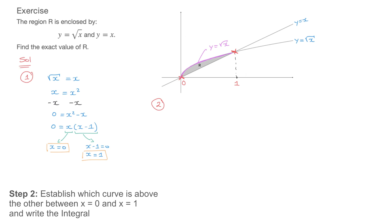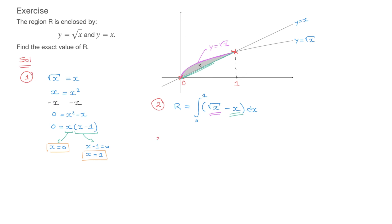Here's why that matters. The enclosed area R equals the definite integral from 0 to 1 of (√x − x) dx. The key point is that the top curve — y equals √x — appears first in the integrand, and the bottom curve, y equals x, is the one being subtracted. That's step two done, and now we move on to the third and final step, where we actually evaluate this integral.